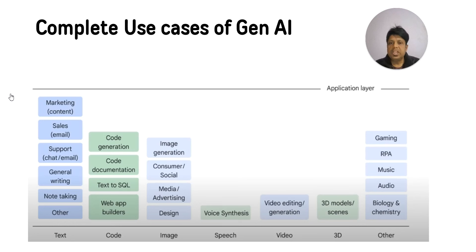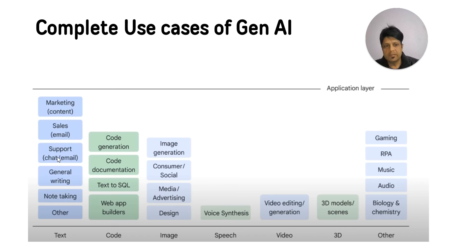Let's understand the complete use cases of Generative AI. It can generate text, which you can use for marketing, website content, writing emails, providing customer support through chatbots, general writing, and summarization. As a developer, it can help you write code, write documentation for that code, convert text into SQL, and help in building websites.